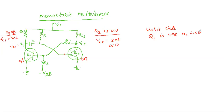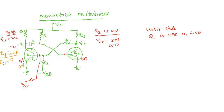Now if you want to change the stable state, I have to apply a triggering pulse. A positive-going trigger pulse is applied to the base of Q1 transistor through capacitor C, which makes transistor Q1 conduct. Now the transistor Q1 will start to conduct — Q1 will be ON. The collector and emitter terminals will be short-circuited and the collector output voltage will become saturation voltage, so VC1 equals 0.